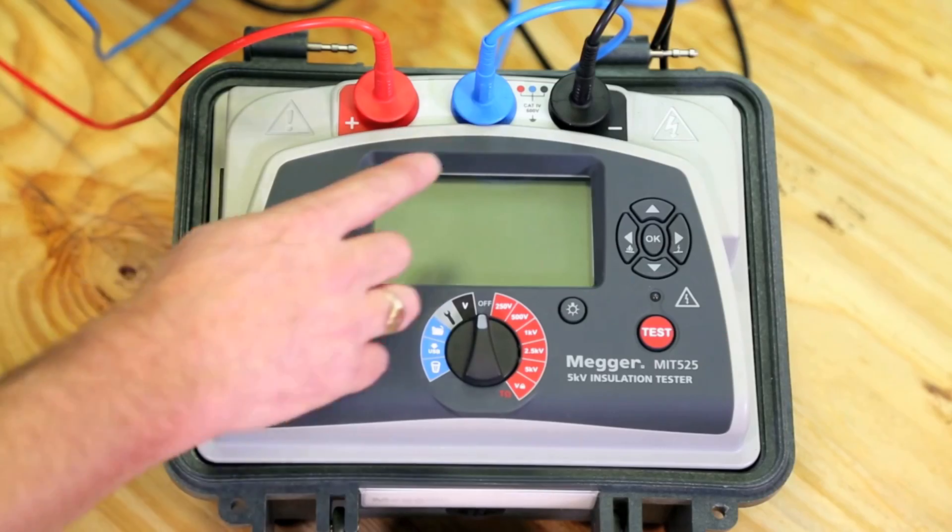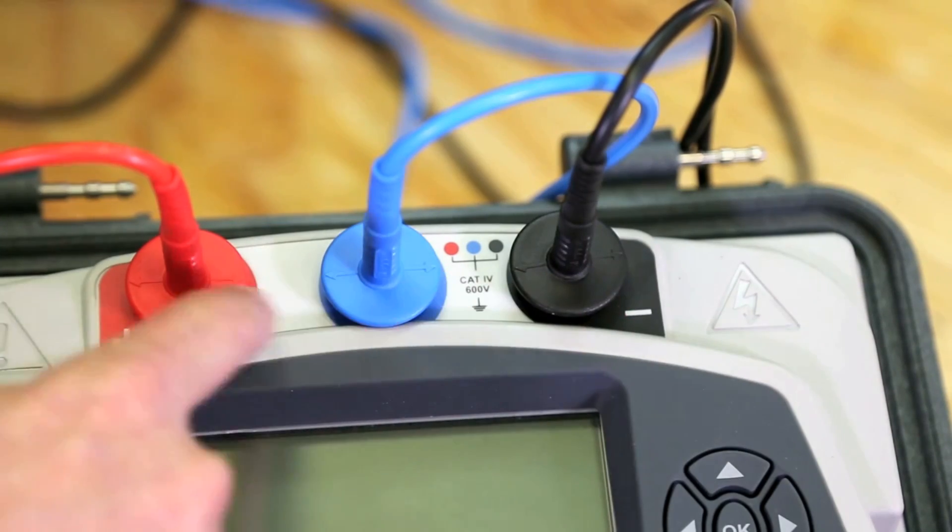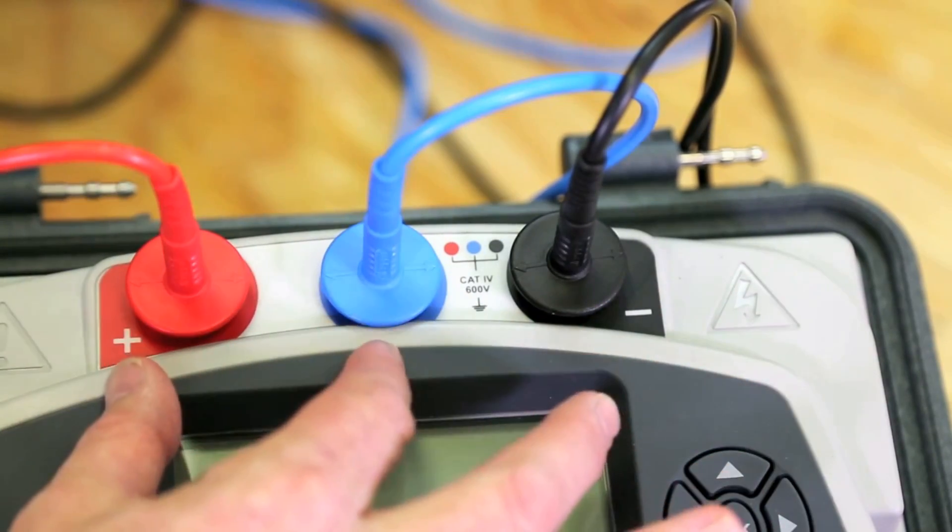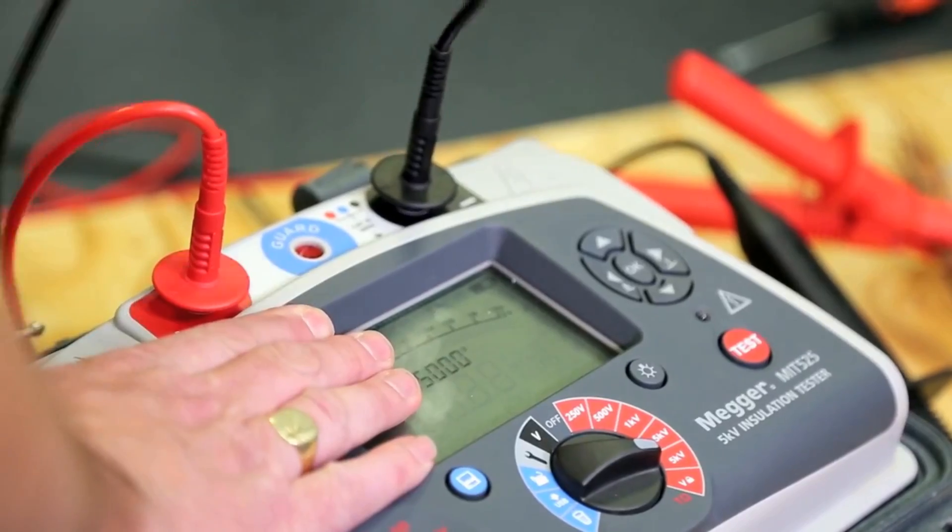All three terminals are rated to category 4 and 1000V between each of them, protecting the unit against misconnection. The lead terminations lock to prevent accidental disconnection.